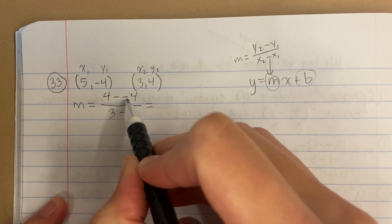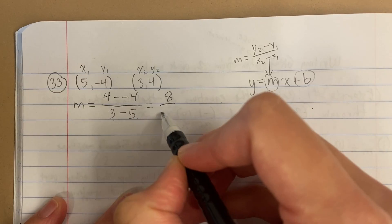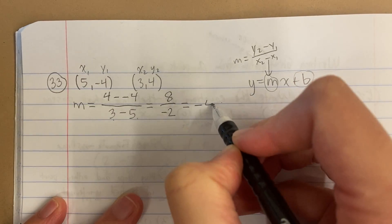This is 4 minus negative 4, that becomes 4 plus 4, that's 8. 3 minus 5, that's negative 2. 8 divided by negative 2 is negative 4.